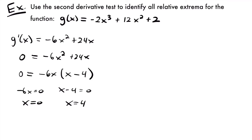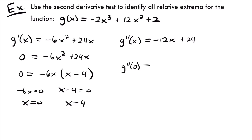Now let's find the second derivative and plug these values in to determine if they are relative minimums or maximums. g''(x) = -12x + 24. Plugging in x = 0: g''(0) = -12(0) + 24 = positive 24. Since this is positive, x = 0 is going to be a relative minimum.